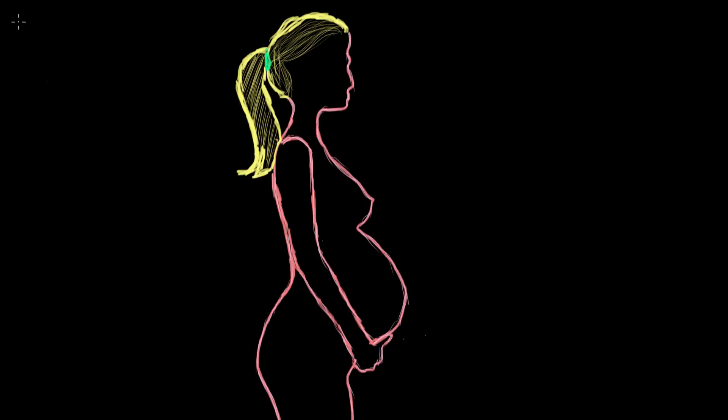When a pregnancy has reached its full term, usually about 38 and a half weeks, it's time for the baby to be born. Childbirth, also known as parturition, typically occurs within about a week of a mother's due date.